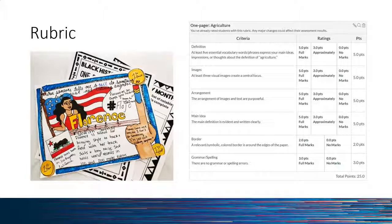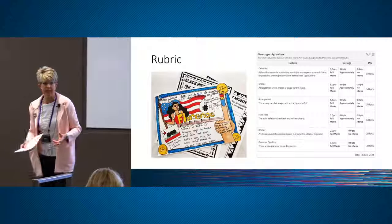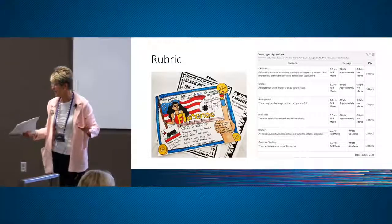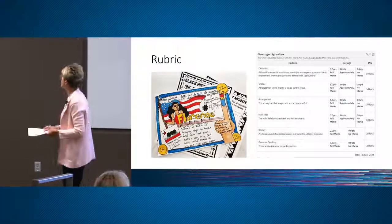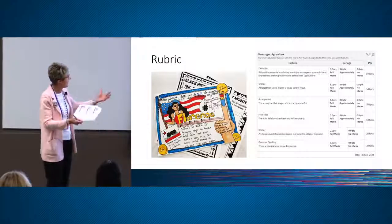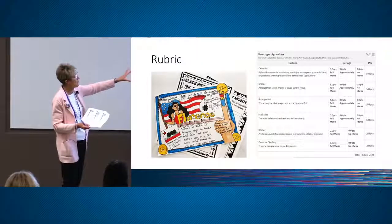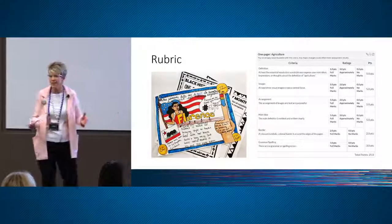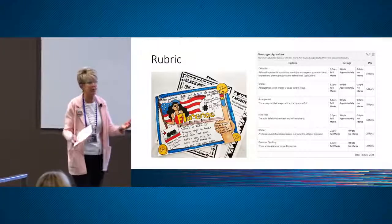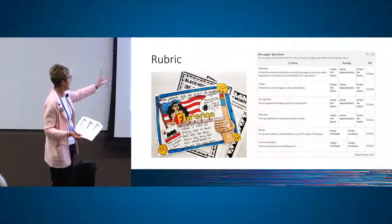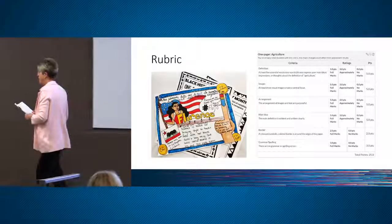Students always want rubrics, and for me it's easier to grade. It's a low-stakes assignment — only worth 25 points, not like a midterm or final. The rubric is pretty simple: five essential key terms or phrases depicting main ideas, at least three visual images that are purposeful — not just a collage — a clear main idea, a border to pull it together, and no grammar or spelling errors.